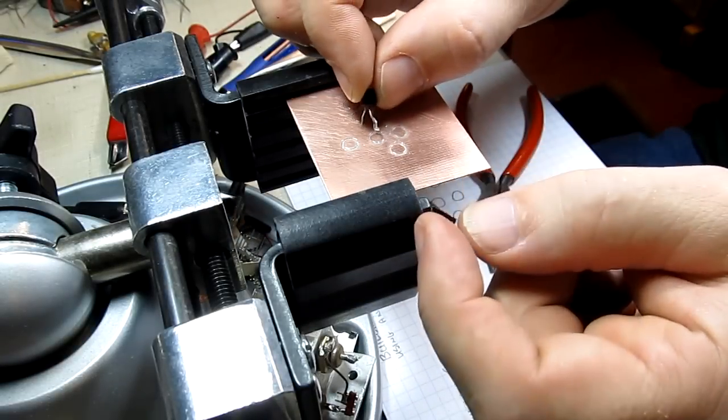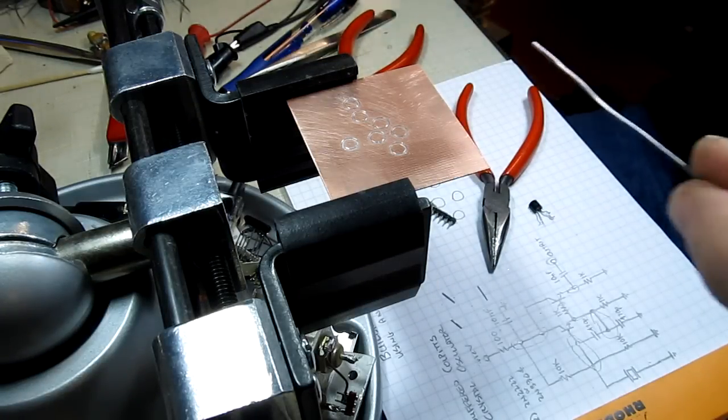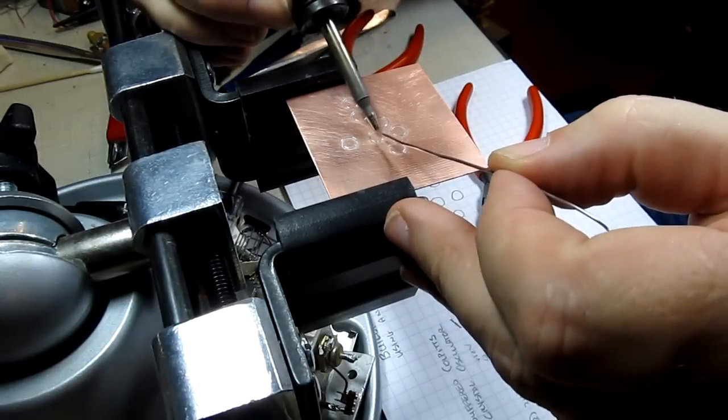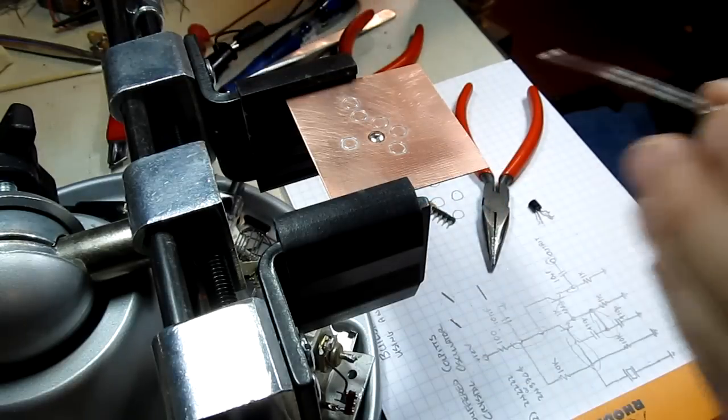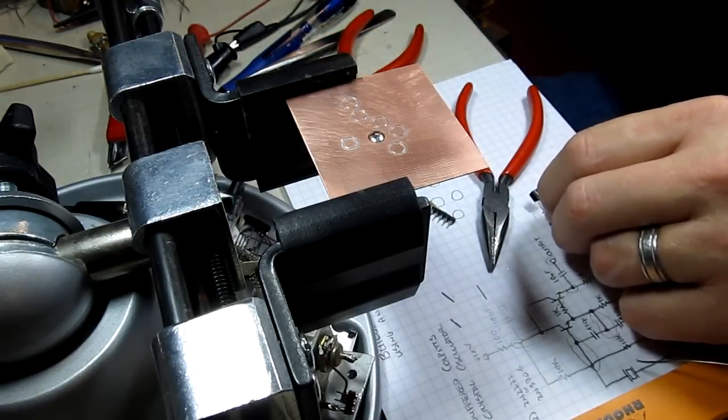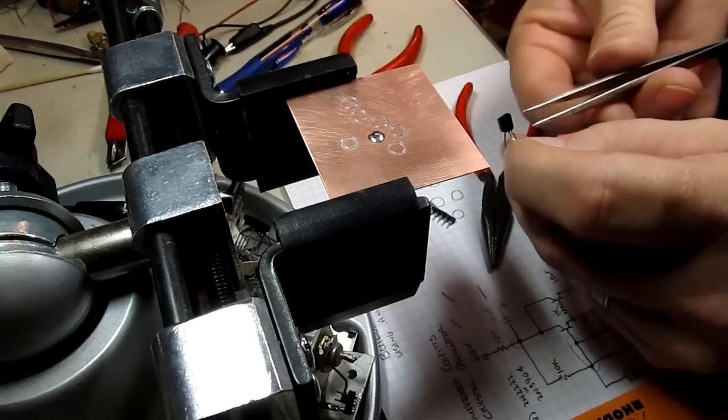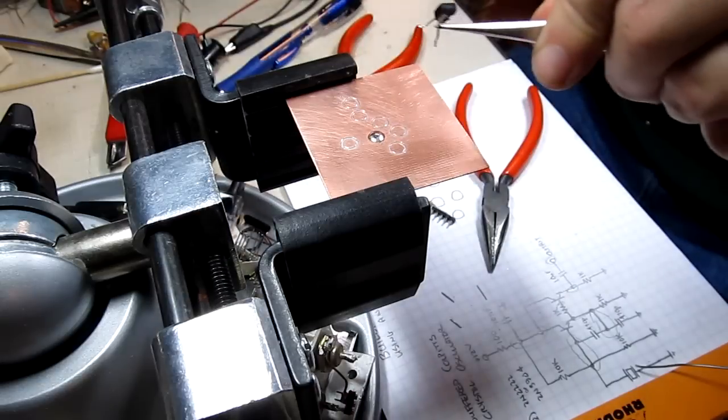I find it easier to sometimes tin the pads here first before I put the first component down. So grab the soldering iron. Let's just tin the lead where the collector is going to go. Put a little blob of solder on there. And then we'll take the transistor and I'll grab it with a pair of tweezers so I don't burn myself on camera.